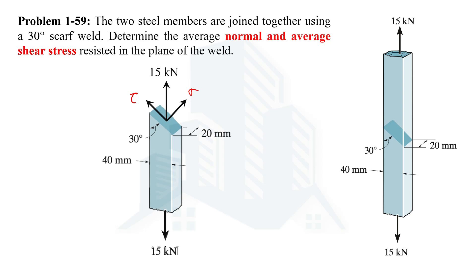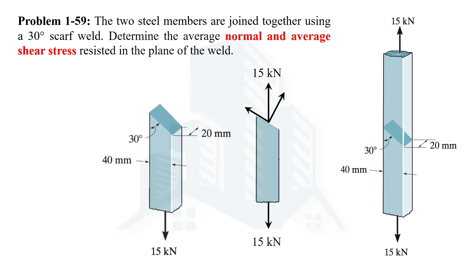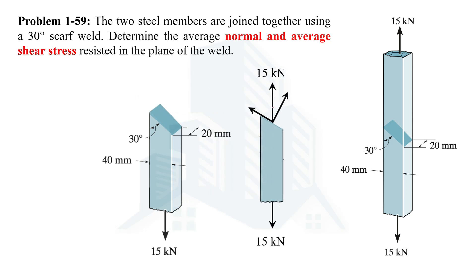Let's calculate these components. To have a better understanding, let's convert the three-dimensional figure to a two-dimensional figure so we can easily understand and calculate these components. We have been given this angle which is 30 degrees. Since there are two parallel lines and any line cutting through them creates equal opposite angles, if this angle is 30 degrees then this one will also be 30 degrees.